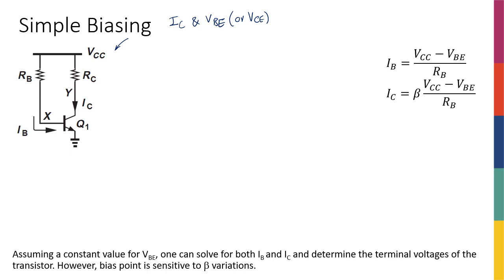So how does this circuit work? Well, I know that if I write KVL from VCC all the way to ground, I'm going to have VCC minus RB times IB minus VBE equal to zero.